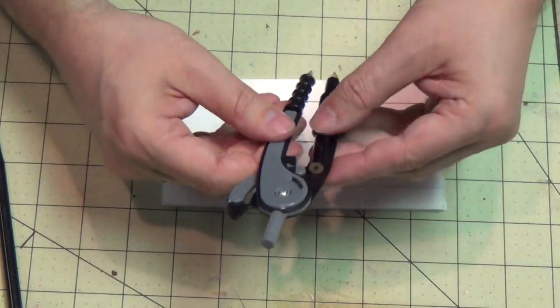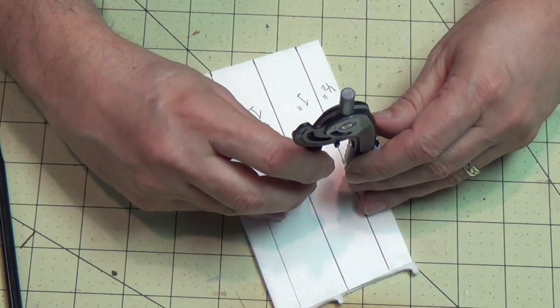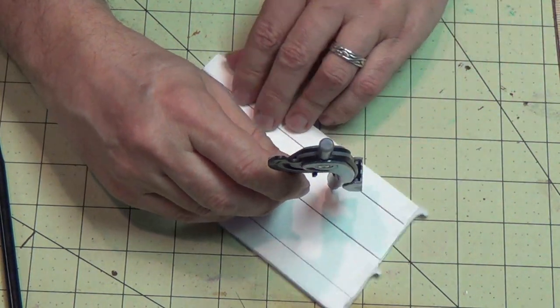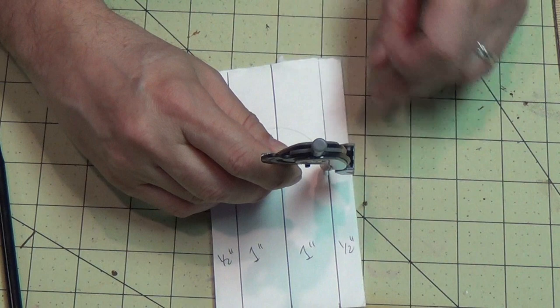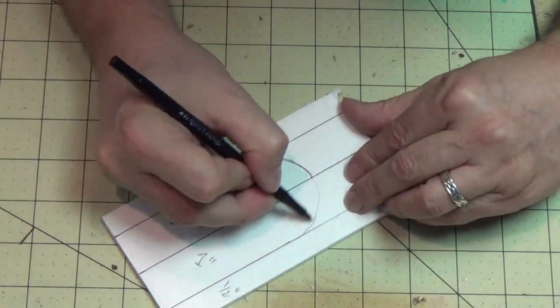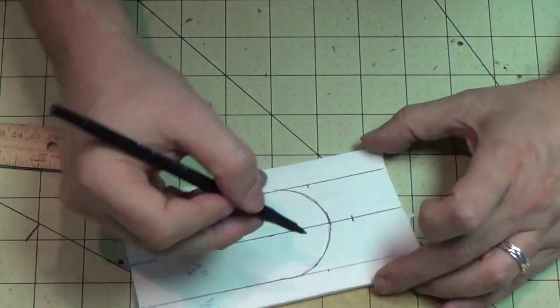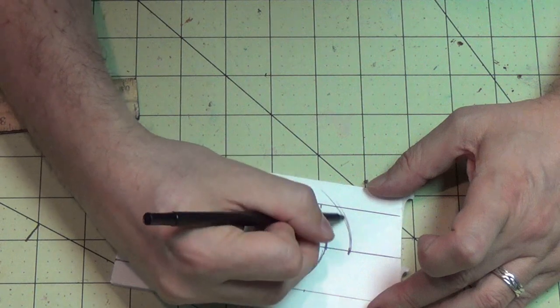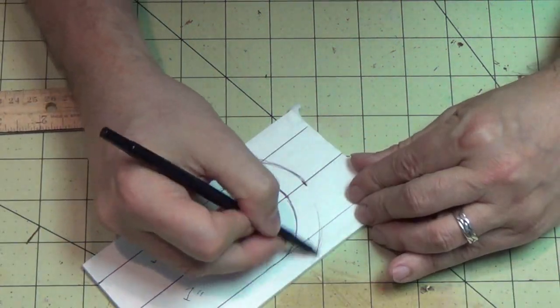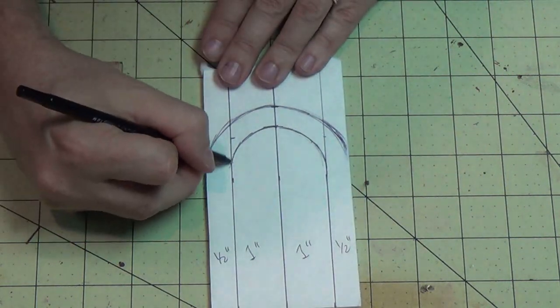Alright guys, I got my cheap dollar store foam core. I'm going to use my compass and put a round end on these two doors. The doors are one inch wide, each door is one inch wide, and the side of the door is going to be a half inch. So I measured from the center there. I'm just going to mark it darker so I can see it easier with the pen. I've got the paper still on the foam core. I'm going to measure it up a half inch and do the top arch of the door by hand.